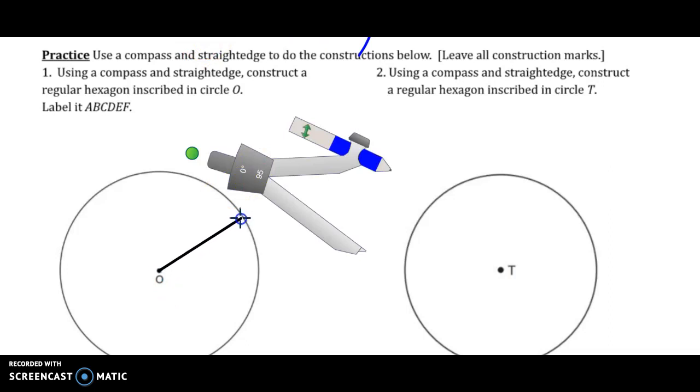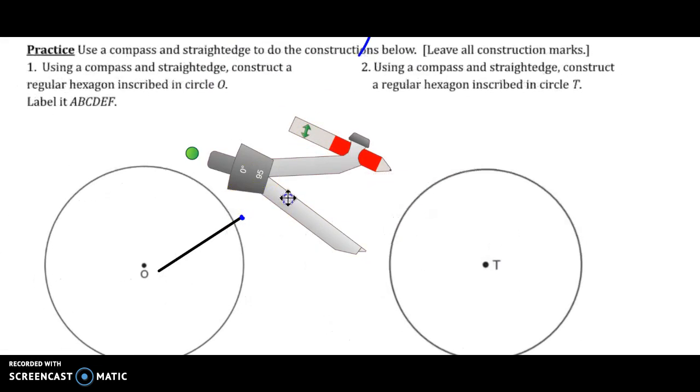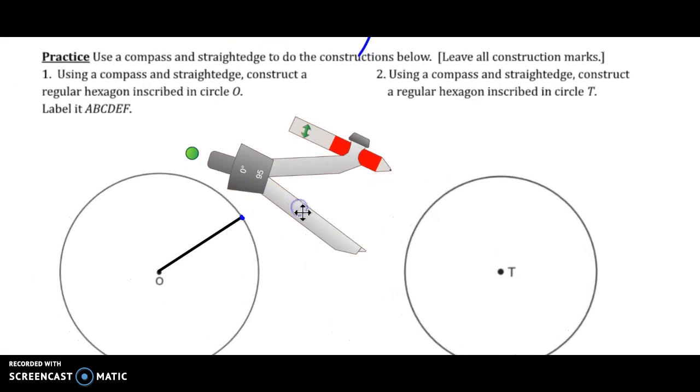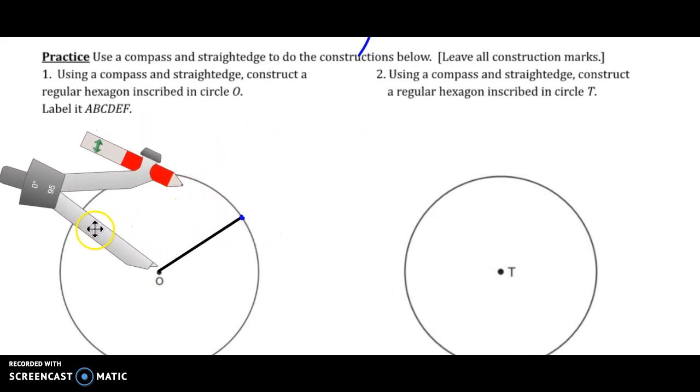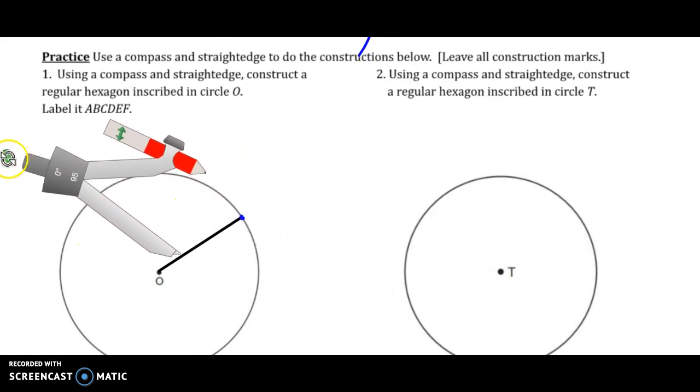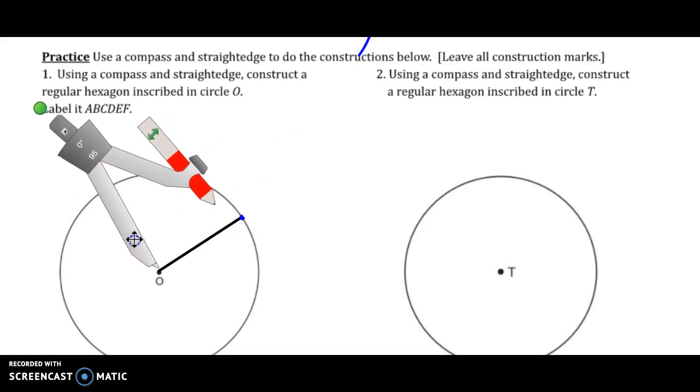I'll draw it this way this time. And the radius extends from the center to the edge of the circle. I'm going to put a little point there.